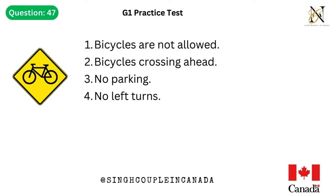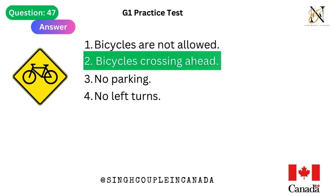Question 47. This traffic sign means: 1. Bicycles are not allowed. 2. Bicycles crossing ahead. 3. No parking. 4. No left turns. Answer is 2. Bicycles crossing ahead.